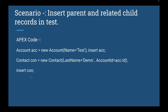Insert a parent and related child record in a test class. This is quite simple but we have to be careful — always insert the parent first, then the child. They want to check if you know this ordering. For example, insert the Account record first and then the Contact. You can then add more required fields as needed for testing.